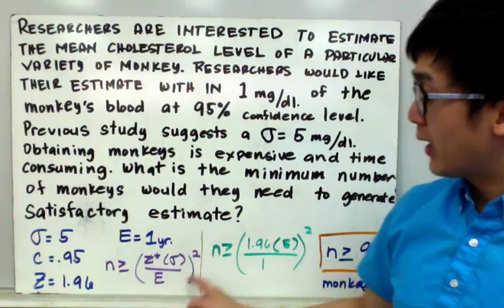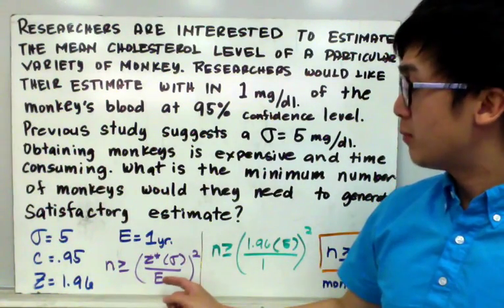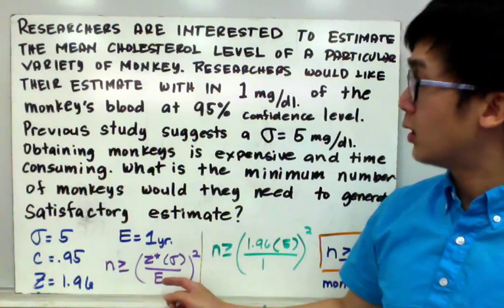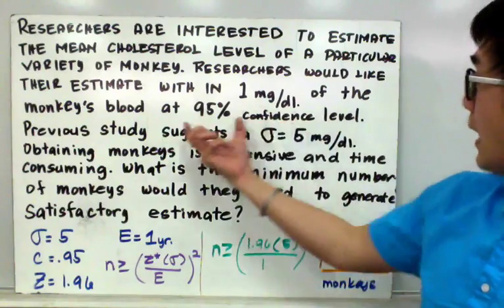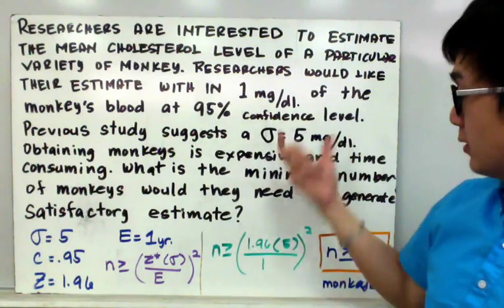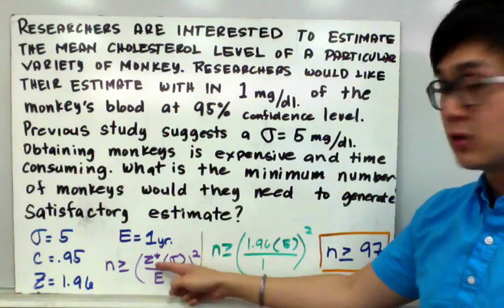To use the formula in determining the sample size, we'll be able to find the minimum number of monkeys we need to make our confidence interval at 95% confidence level. So we have n greater than or equal to 1.96, which is your z star, times the population sigma of 5,